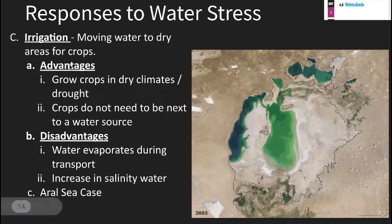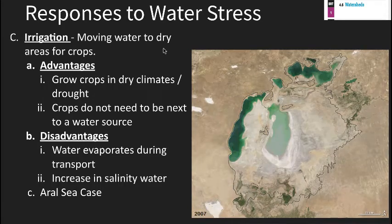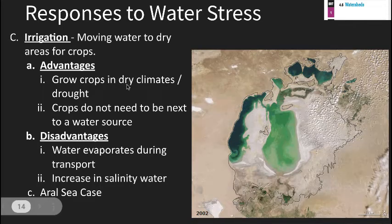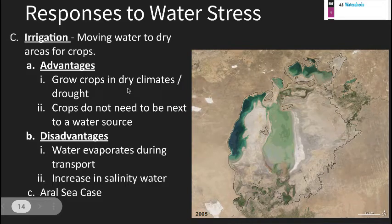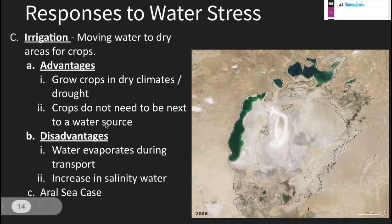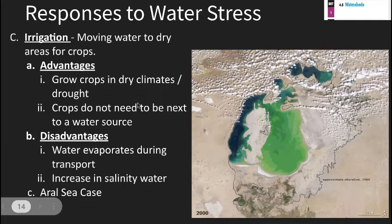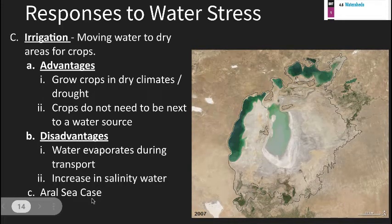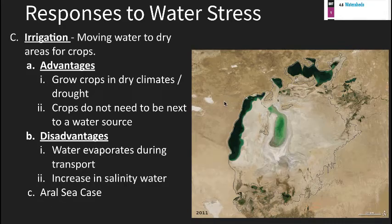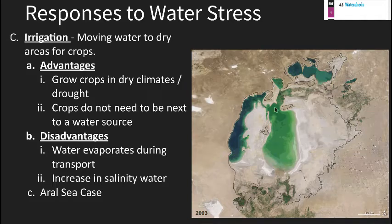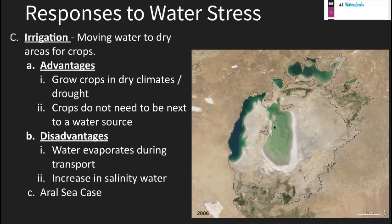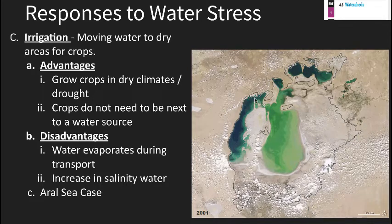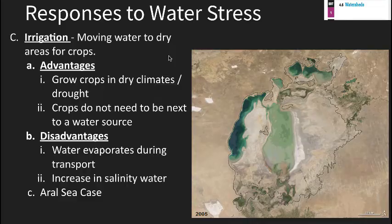Another response to water stress is irrigation — moving water to dry areas for crops. Once the Colorado River is dammed up, it's heavily irrigated through canals that transport the water elsewhere. This helps grow crops in dry climates, and crops don't need to be directly next to a water source. The downside is that water evaporates during transport, and salinity in the water can increase as it moves. The Aral Sea is an example — as time passes, the body of fresh water becomes less and less due to the massive amount of crops drawing from that water source.